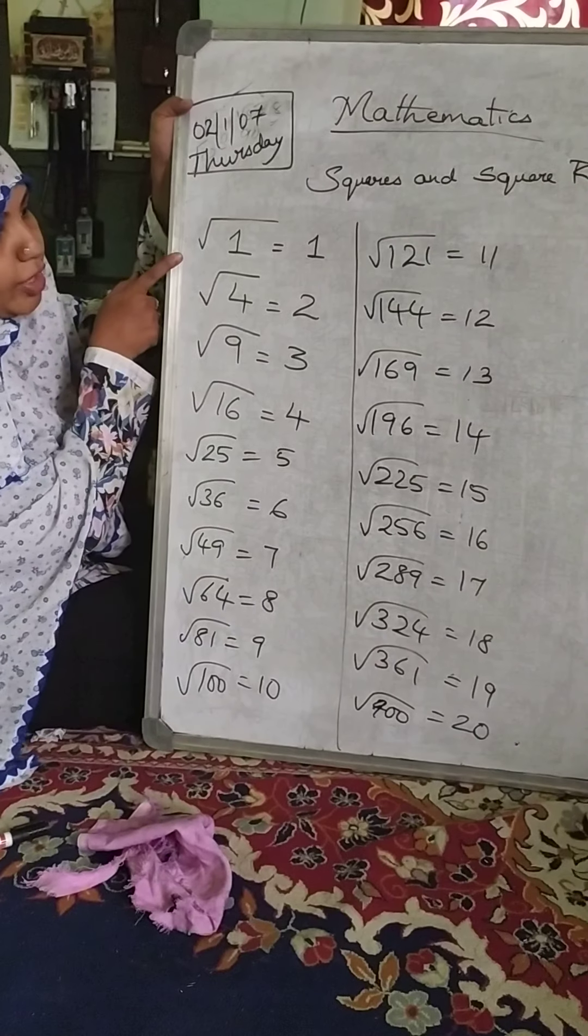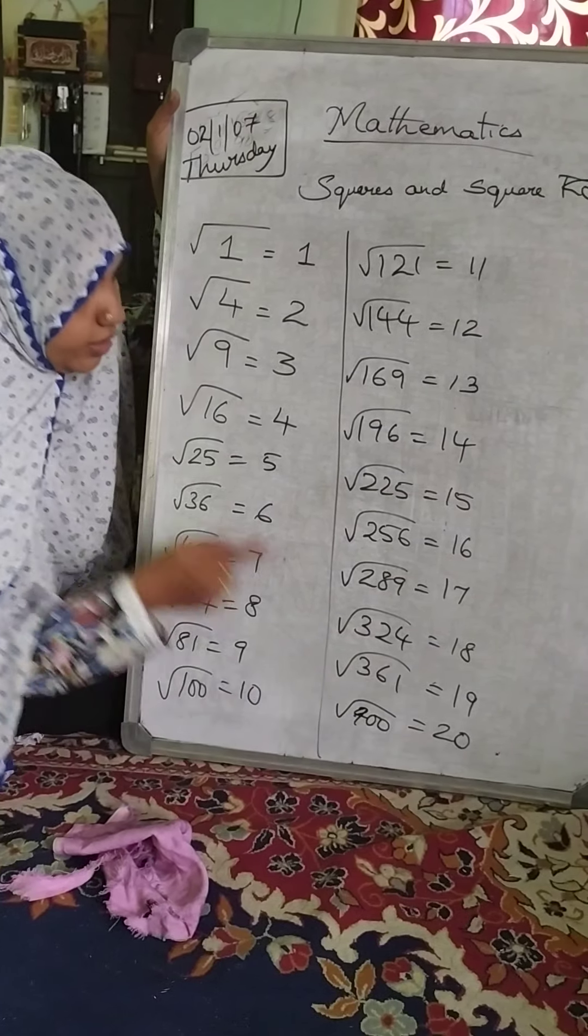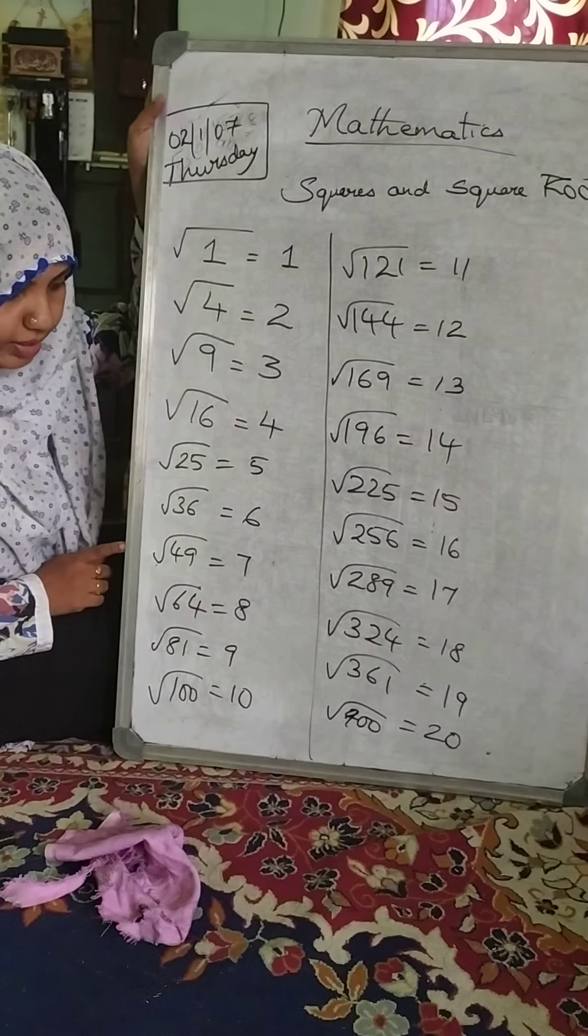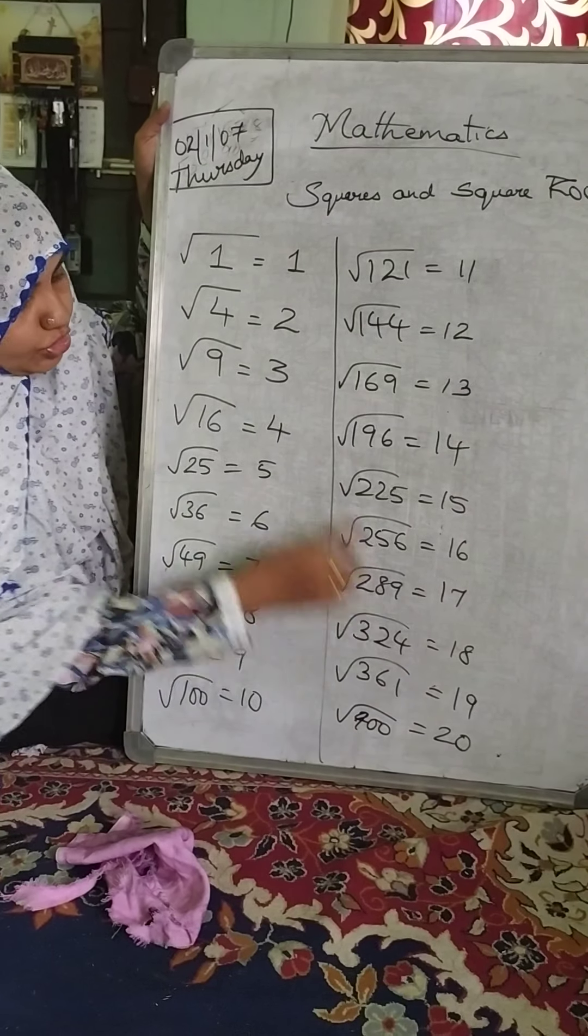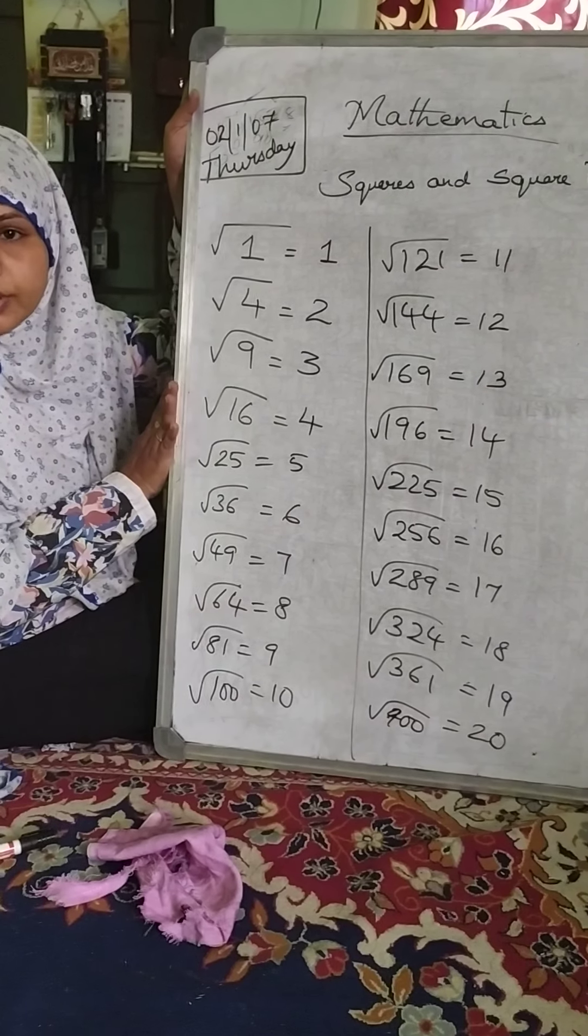So children, I have written square roots from 1 to square root of 400 which is till 20. So learn them thoroughly. Here also you can see a connection, here also you can see a connection, this is about squares and square roots. Thank you.